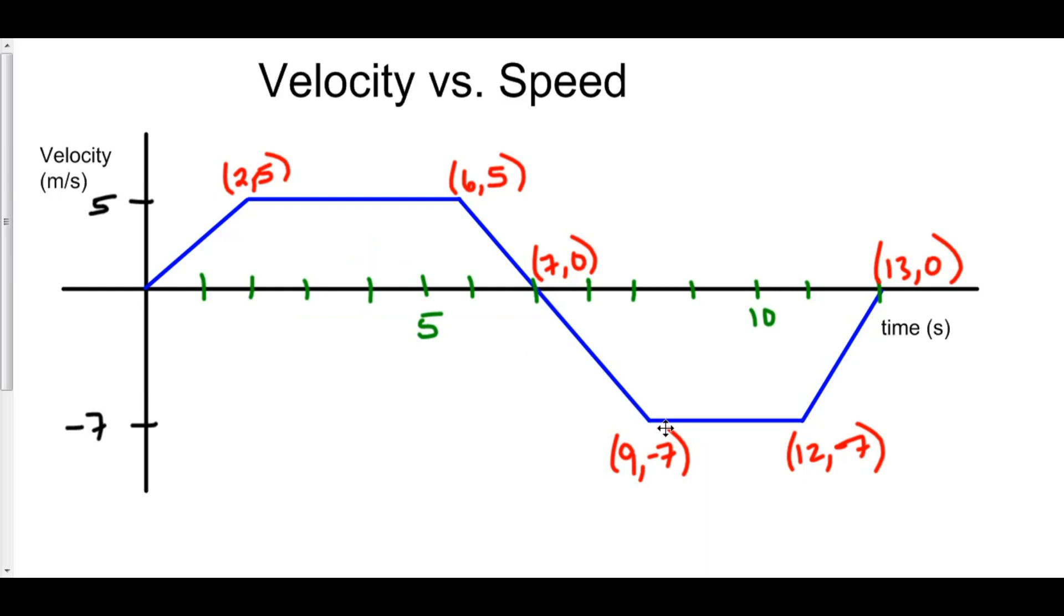and then decreases even more. We have negative velocity at time t equals 9, and it's constant at velocity equals negative 7 up until time 12, when the velocity increases again and becomes zero.